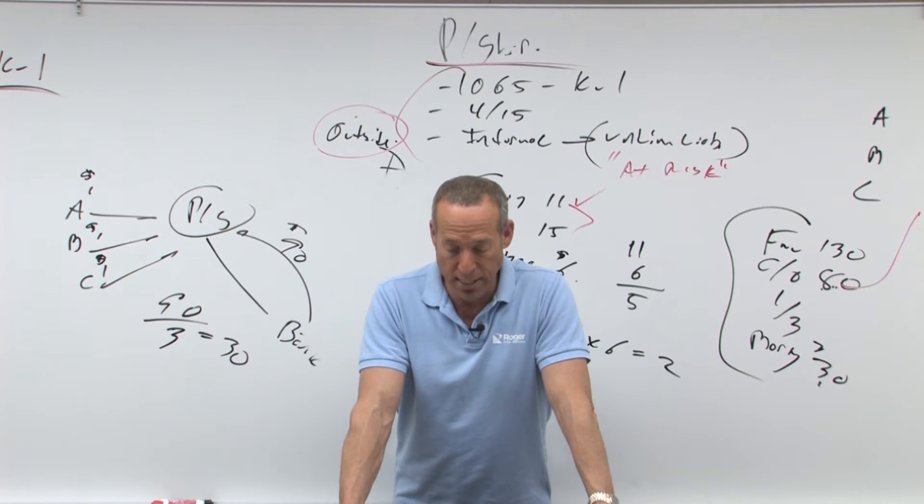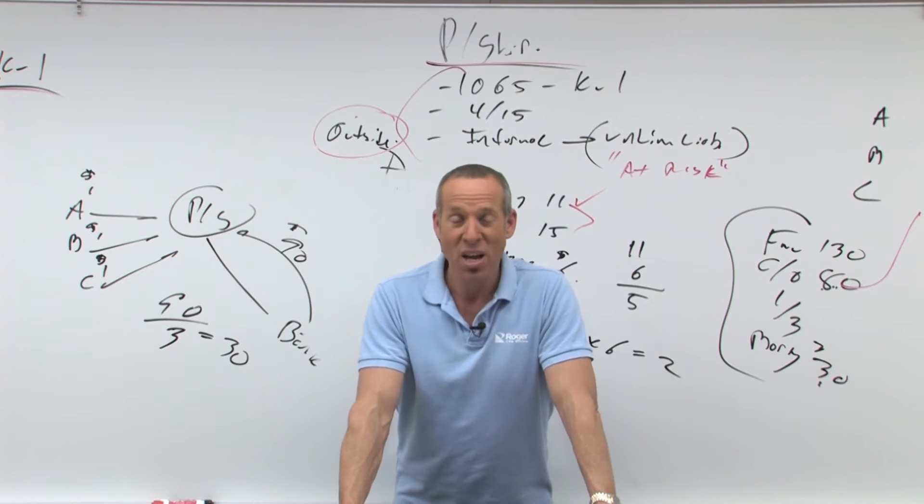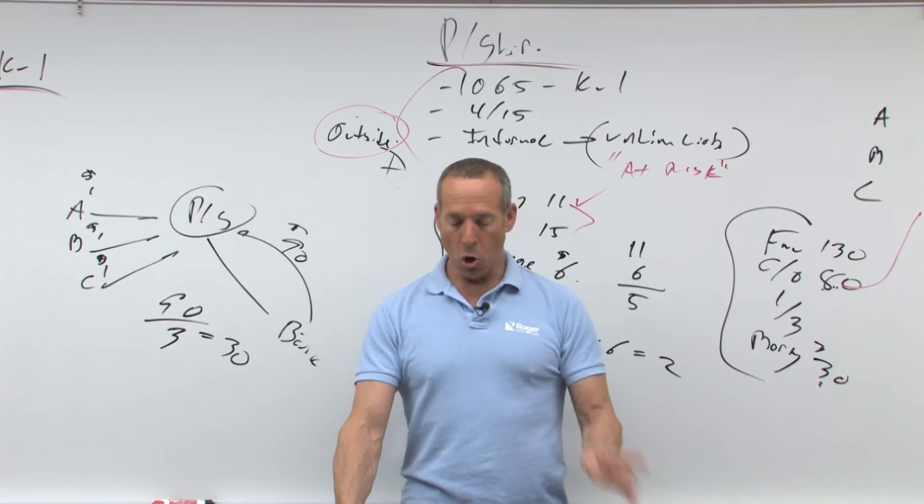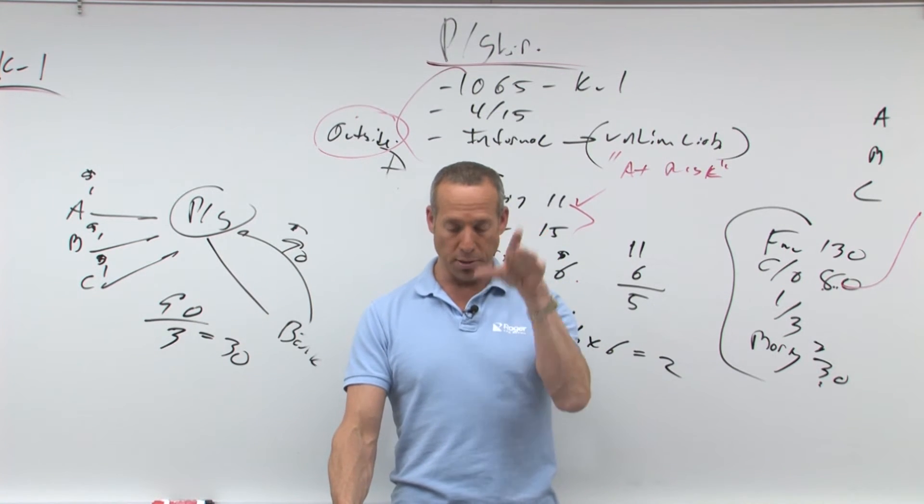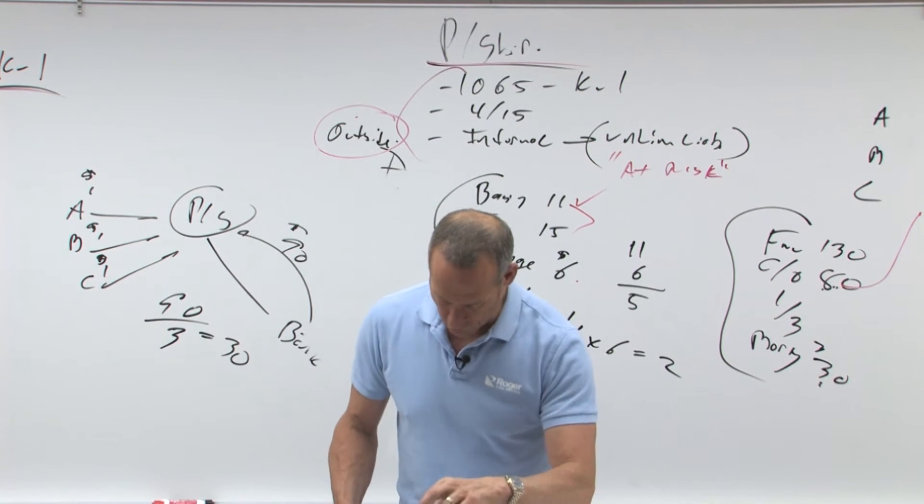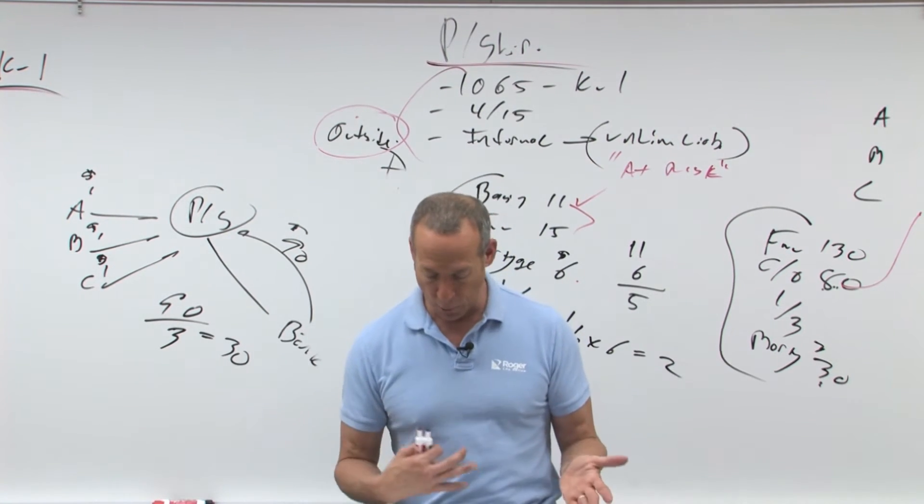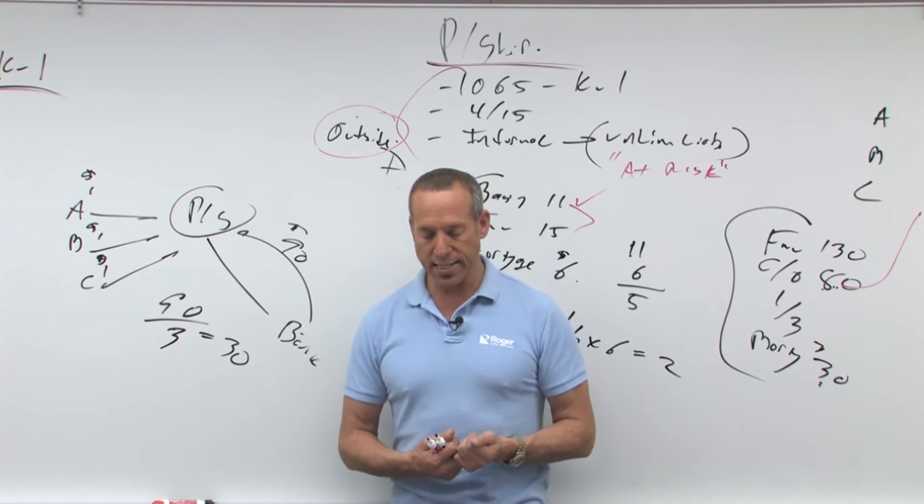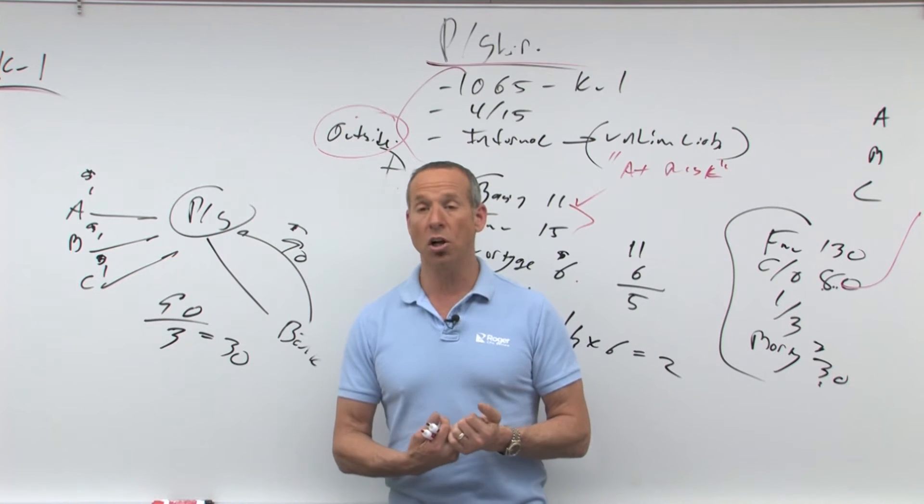If a distribution would have reduced it below zero, the partner will either adjust the basis of the distributed asset, or in the case of cash, report a gain. Because if you get money, but you have a zero basis, you must have had a gain. So basis never, these are the bullet points, the key points.